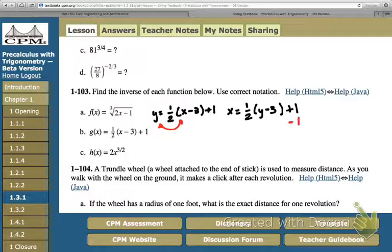The first move is we've got to subtract the 1. So, I have x minus 1 equals 1 half, y minus 3. Alright, now a lot of you wanted to go in there and move that 3. You cannot move that 3 until you get rid of this 1 half.